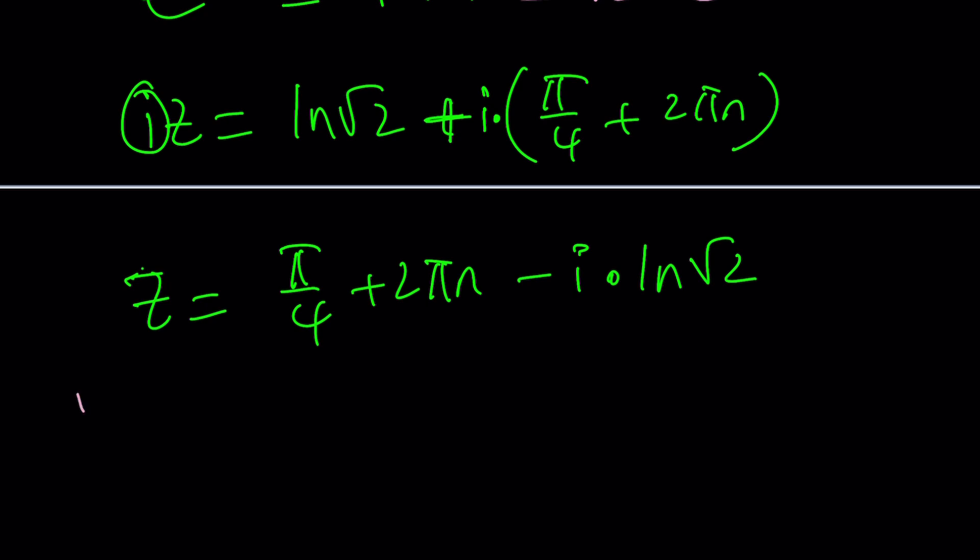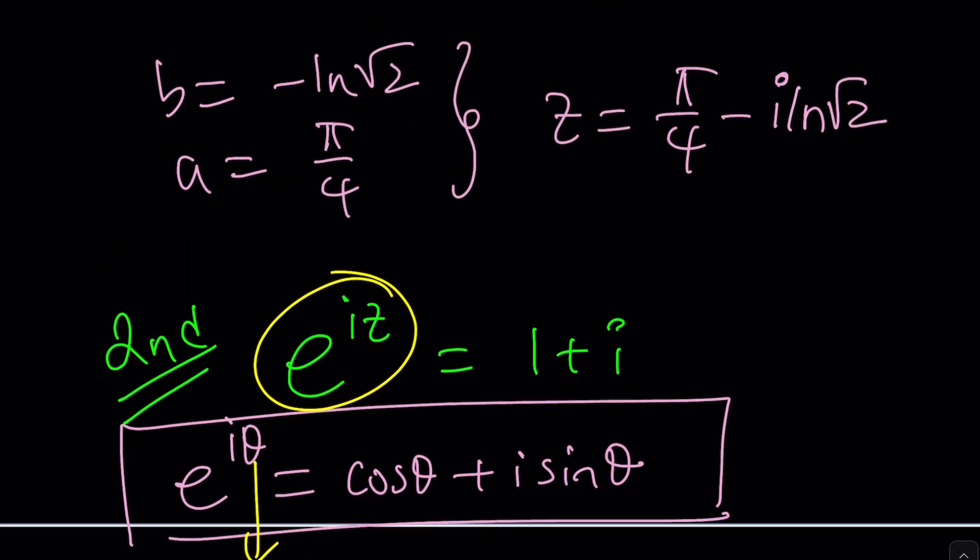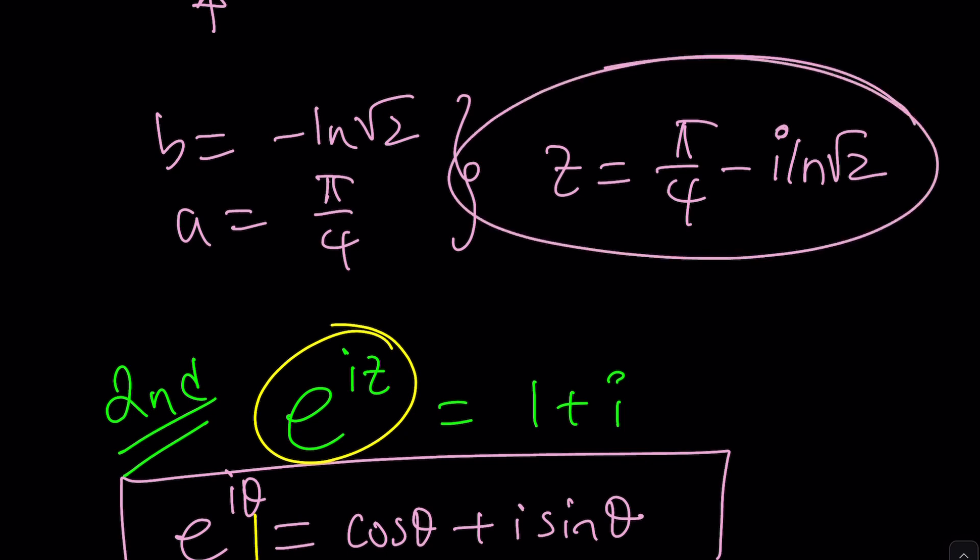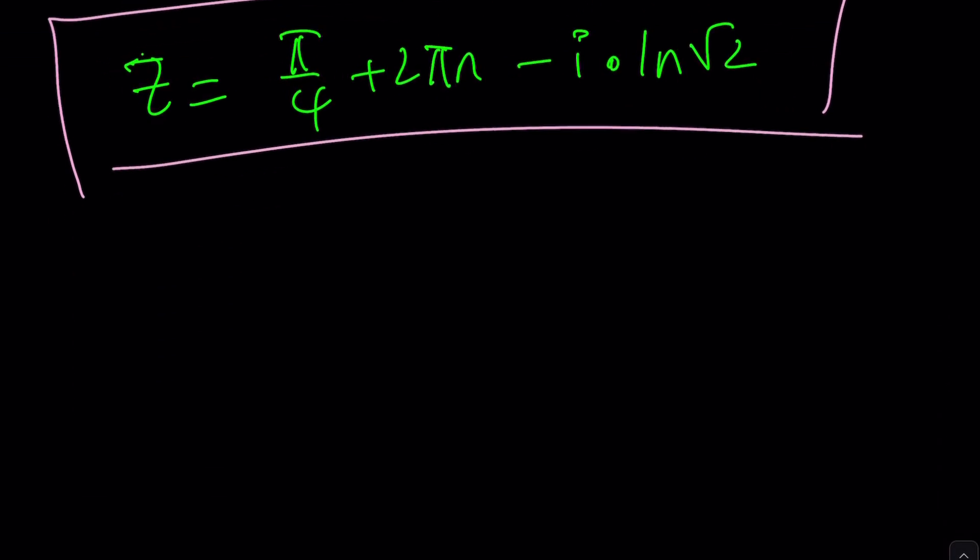Now you can go ahead and compare this to the result from the first method, and they're going to be very similar, obviously, right? But the difference will be here with the 2 pi n, which gives us all the solutions. But if n is 0, we're going to get a particular value, which is the principal value, and that'll be pi over 4 minus i times ln root 2.